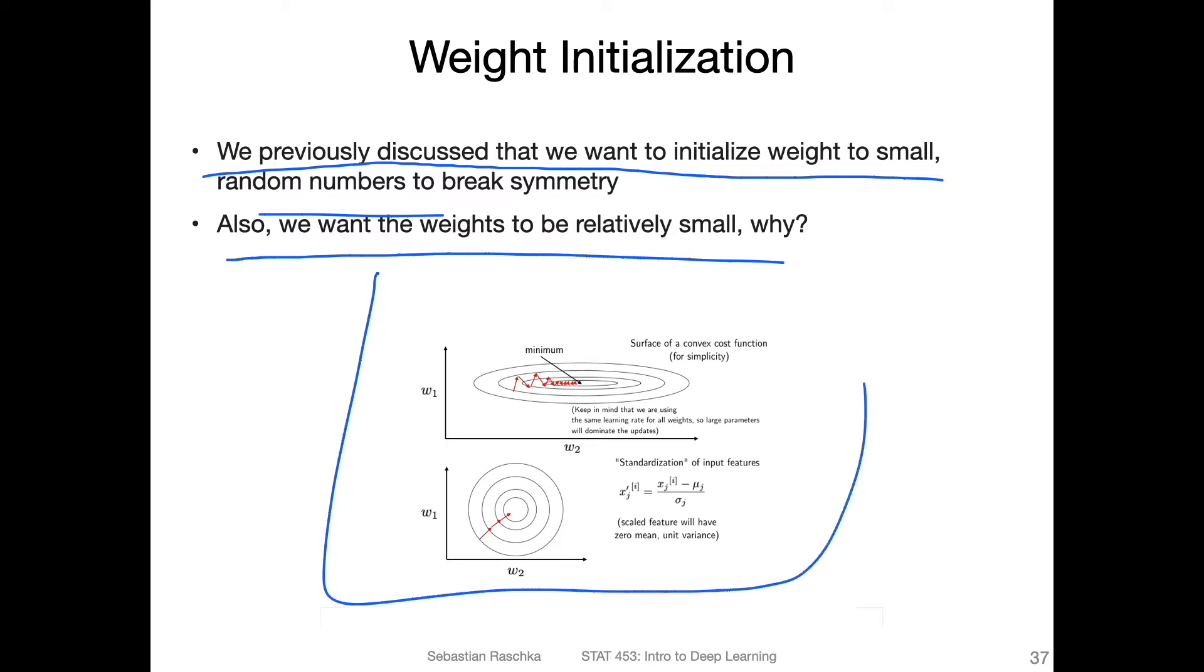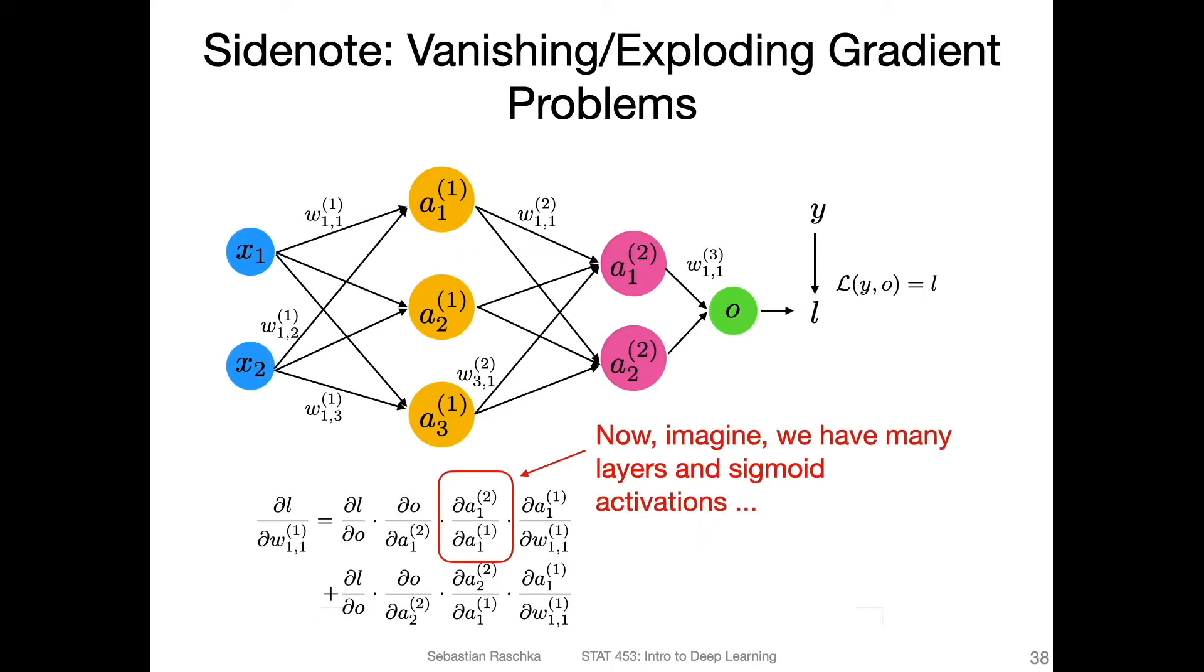It has to do with what I showed you earlier in an earlier video about input normalization. To motivate this a little bit, think of the multilayer perceptron again, where we have the multivariable chain rule for updating one particular weight. This is something I just copy and pasted from a previous slide, nothing new here.